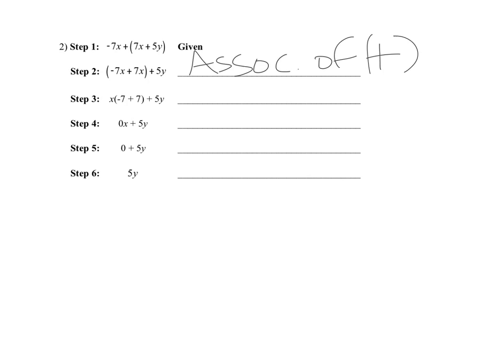The next one: looking from step two to step three, what changed is this x right here came out and went to the outside of the parentheses. That's the distributive property. If you imagine taking that x and putting it back in and going back up to step two, that's just the distributive property done backwards — I pulled the x out, that's the distributive property.